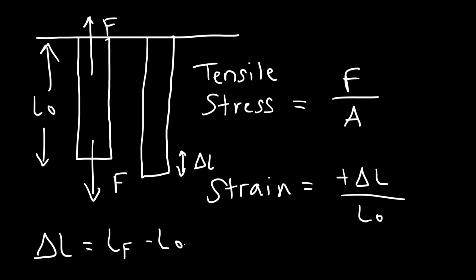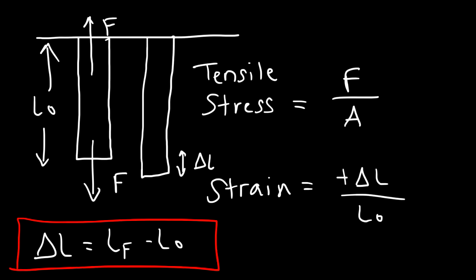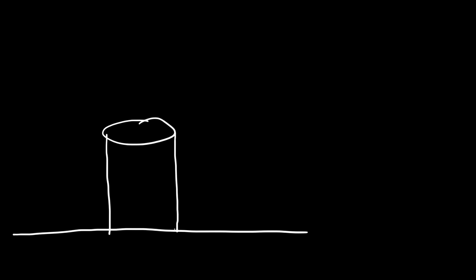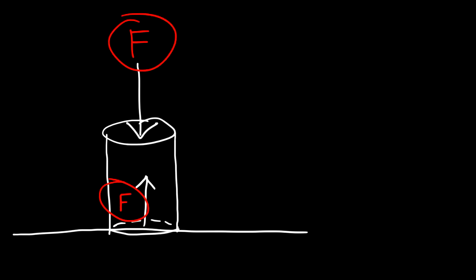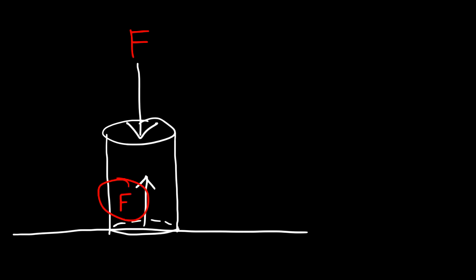Now let's say we have a column that rests on a horizontal surface and we apply a downward force on it. There's going to be an upward force acting on it, which is basically the normal force exerted by the surface. A portion of that normal force equals the downward force we apply — the normal force is the sum of the applied force plus the weight of the object. Those two forces cause compression, causing the object to decrease in length, so this object is under compressive stress.